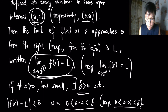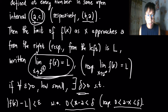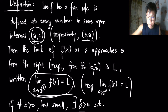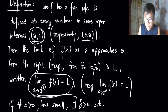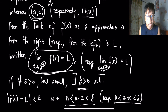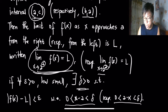The plus symbol indicates the right-hand limit. For every epsilon greater than 0, however small, there exists a delta greater than 0 such that |f(x) - L| < epsilon whenever 0 < x - a < delta. For the left-hand limit, the interval is (b, a), and the minus symbol indicates the left. The condition becomes |f(x) - L| < epsilon whenever 0 < a - x < delta.